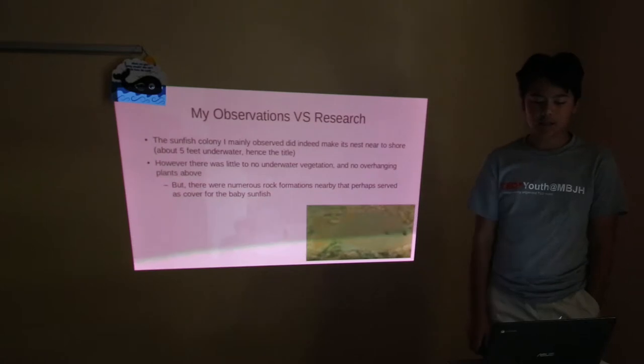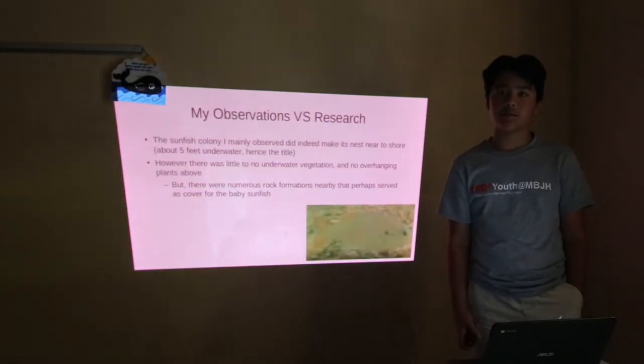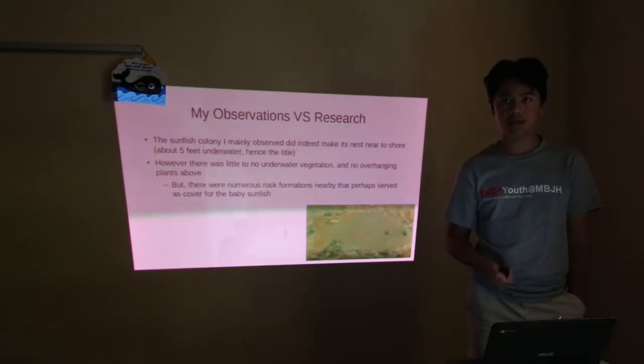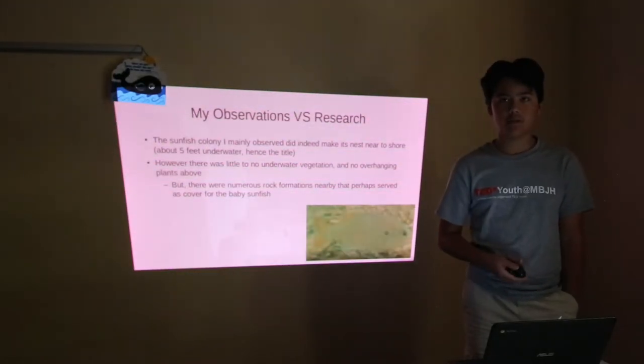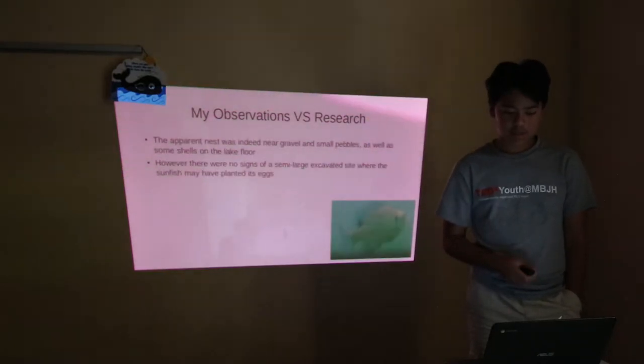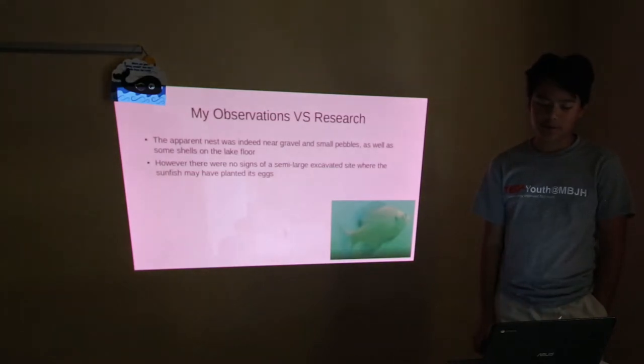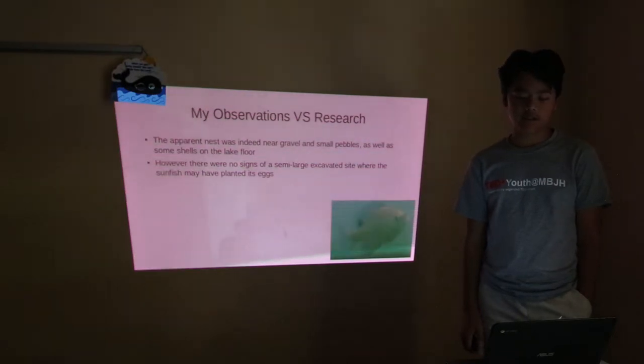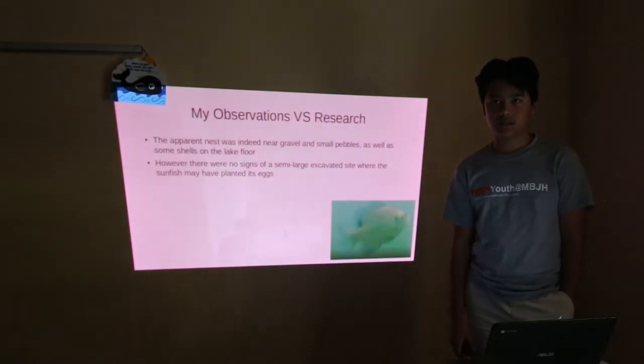The sunfish colony I mainly observed did make its nest near the shore, about five feet underwater. However, there was little to no underwater vegetation and no overhanging plants above. But, there were numerous rock formations nearby that may have served as cover for the baby sunfish. The apparent nest was near gravel and some small pebbles, as well as some shells on the lake floor. However, there were no signs of a semi-large excavated site where the sunfish may have planted its eggs.